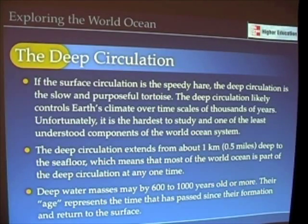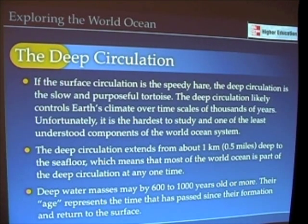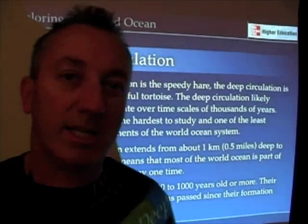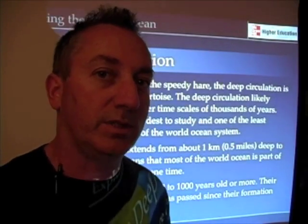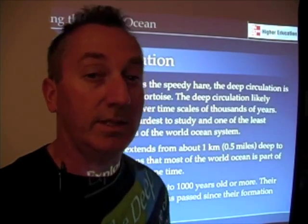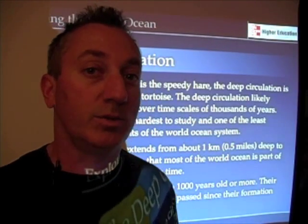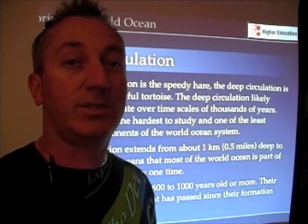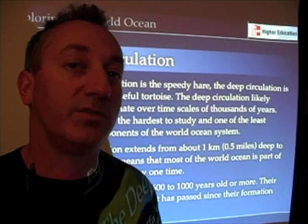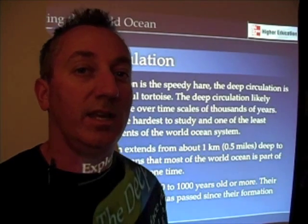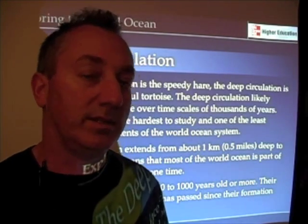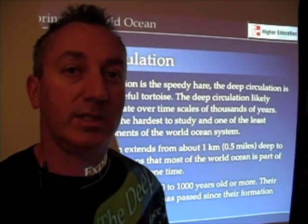If we think of the surface circulation as a kind of speedy hare, then the deep circulation is like that slow and purposeful tortoise in the fable — the tortoise and the hare. The tortoise is slow moving but gets to its destination, while the hare runs and gets tired, runs and gets tired.